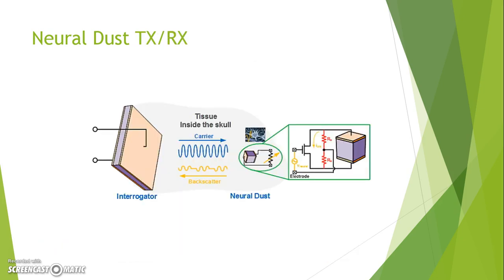In this slide, we can see the subdural transceiver, or the interrogator, which talks with the neural dust. What makes this system possible is the piezoelectric material. When the interrogator sends a carrier message to the neural dust, the neural dust vibrates. With that vibration, we have enough potential to record extracellular voltage. With this recording, we send another signal called the backscatter to the interrogator, which provides information about whether there's an action potential or no action potential near the neural dust.